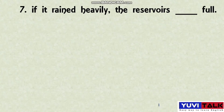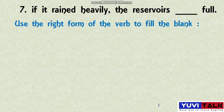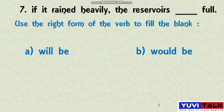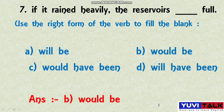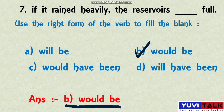Question 7: 'If it rained heavily, the reservoirs dashed full.' Use the right form of the verb. Options include: will be, would be, would have been, will have been. For this conditional sentence, 'would be' is the right answer.